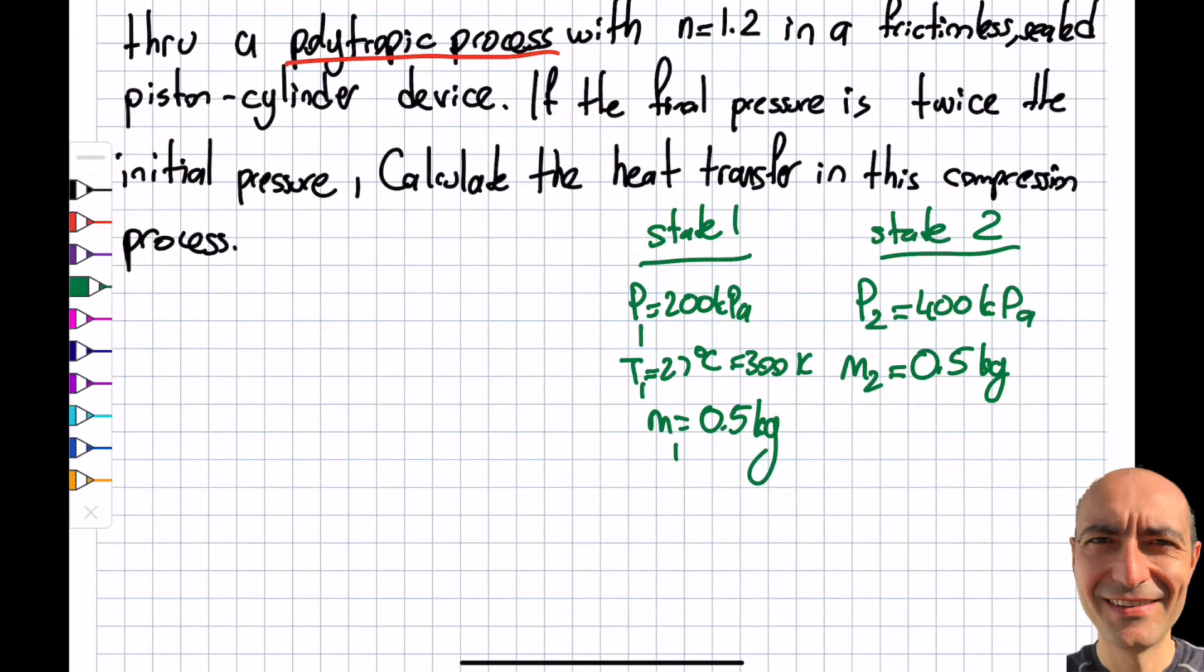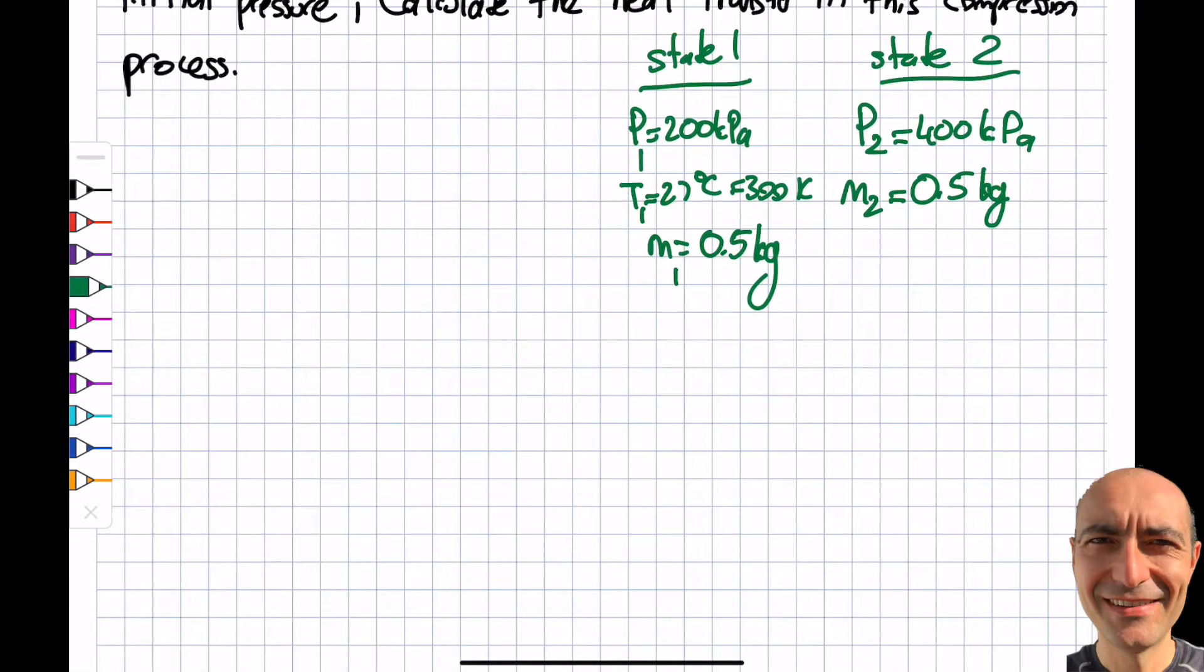It's asking me to calculate the heat transfer. I visited this question and I found you the boundary work, but now I'll go one more step. The first thing I will have to do is, looking at state 1 and state 2, let me start by state 1. PV is equal to MRT, because I see that I have three of them, so I should be able to find the missing, which is the volume in this particular case.